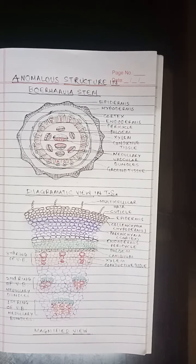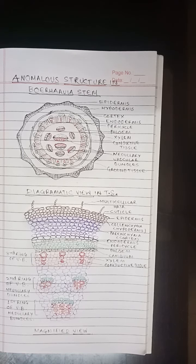Then endodermis: it consists of a single layer of cells separating the cortex from the vascular tissue. Casparian thickenings are absent in the cells of the endodermis.